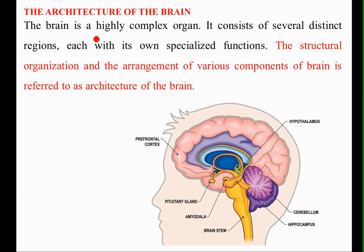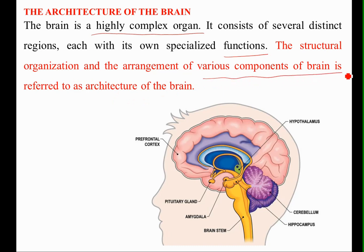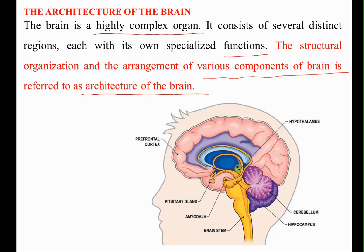The brain is a highly complex organ. It consists of several distinct regions, each with its specialized function. The structural organization and arrangement of various components of the brain is referred to as the architecture of the brain. The brain is usually composed of the cerebrum, cerebellum, hypothalamus, and other components. Let us see them one by one.